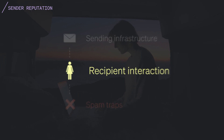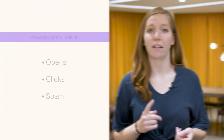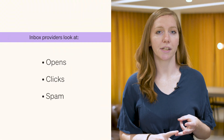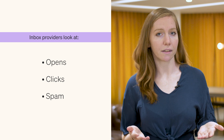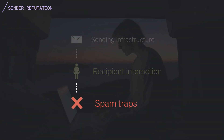The second factor is how recipients interact with your messages. Inbox providers look at who you've messaged and whether they've opened, clicked, marked your email as spam, and so on. In particular, they pay close attention to when you email a spam trap — an email address created solely to capture bad senders. Spam traps come in a variety of forms and indicate that the sender either purchased their list or didn't have practices in place to remove old emails and confirm that an email was legitimate.